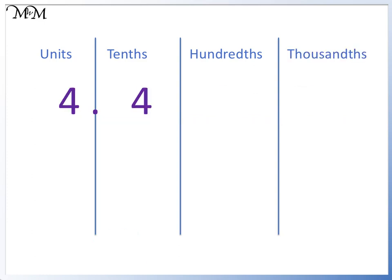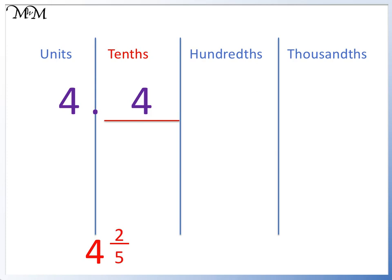4.4. The decimal number finishes in the tenths column, so the fraction is out of 10. Reading across from the decimal point, we have the number 4, so we have 4 tenths. The answer is 4 and 4 tenths. To take it one step further, 4 tenths can be simplified to 2 fifths by halving both the numerator and the denominator, giving us 4 and 2 fifths.